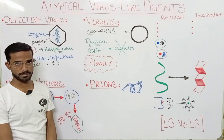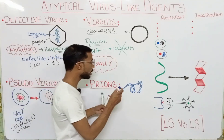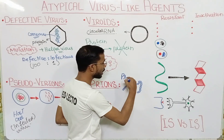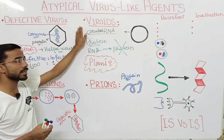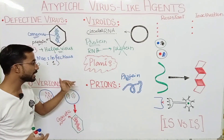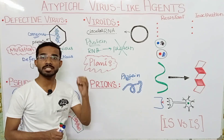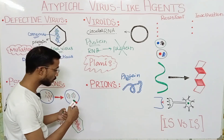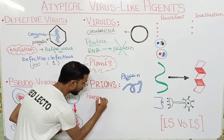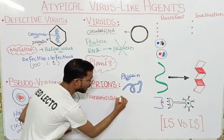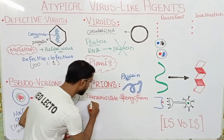Next is the prions. P for prions and P for protein — they only contain protein; they are just made up of protein. As viroids contain only genetic material, prions just contain protein. Prions actually cause transmissible spongiform encephalopathies. This is a very important point — they are involved in transmissible encephalopathies, meaning they are related to the brain.